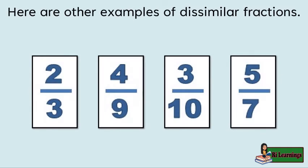Here are other examples of dissimilar fractions: two-thirds, four-ninths, three-tenths, five-sevenths.